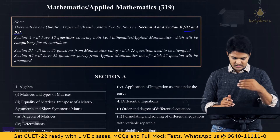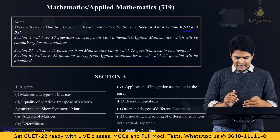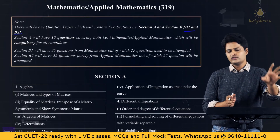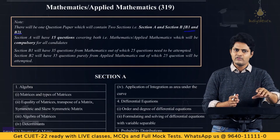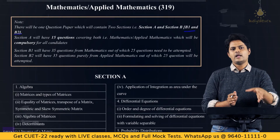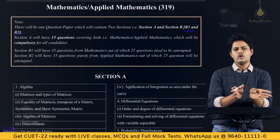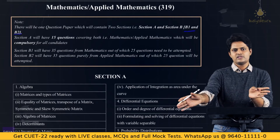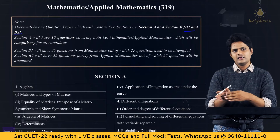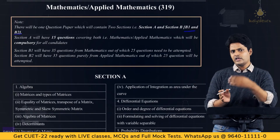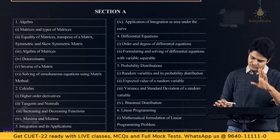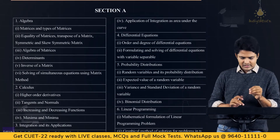Section B2 will similarly have 35 questions purely from applied maths. If you have chosen maths, the 15 questions from Section A are common for everyone and 25 are attempted from B1. Those who chose applied maths attempt 15 common questions plus 25 from B2, totalling 40 questions.